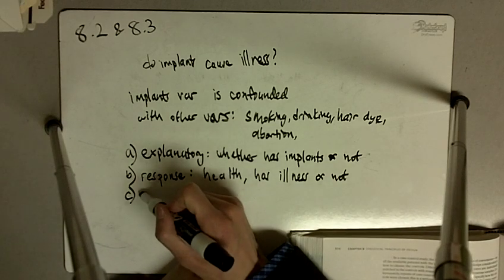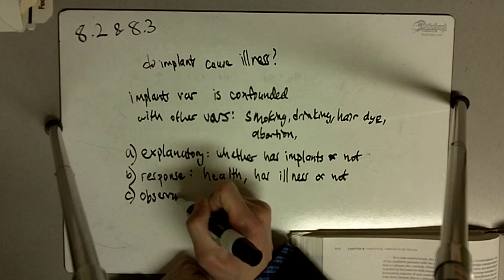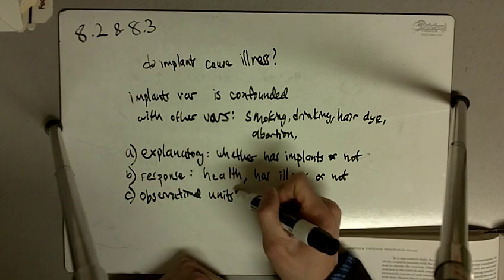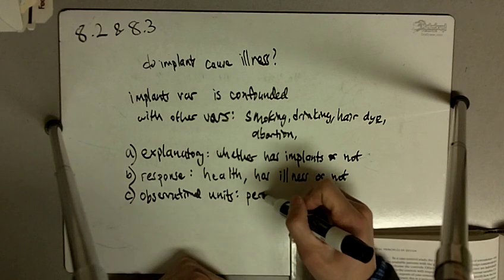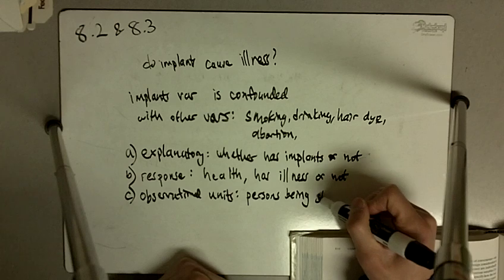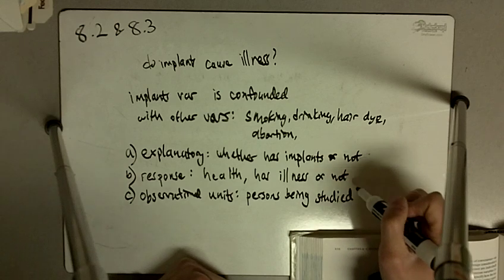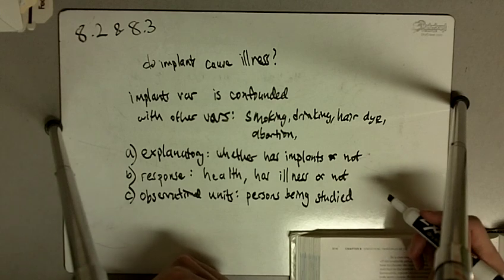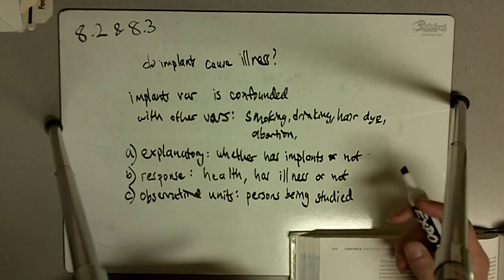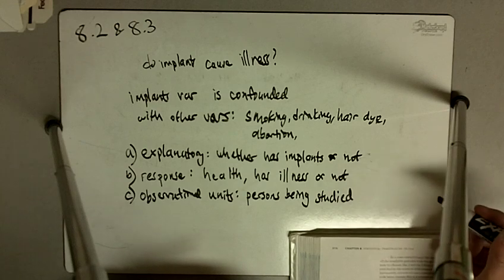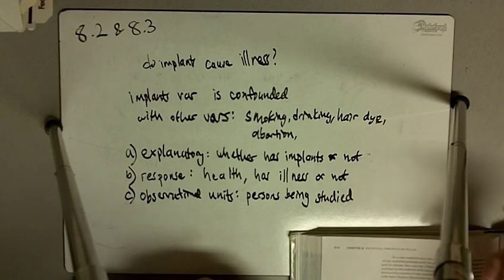And the observational units are the persons being studied. So these would be either women who have implants or women who do not have implants. Of course, we would be comparing women to women instead of trying to compare women to men.